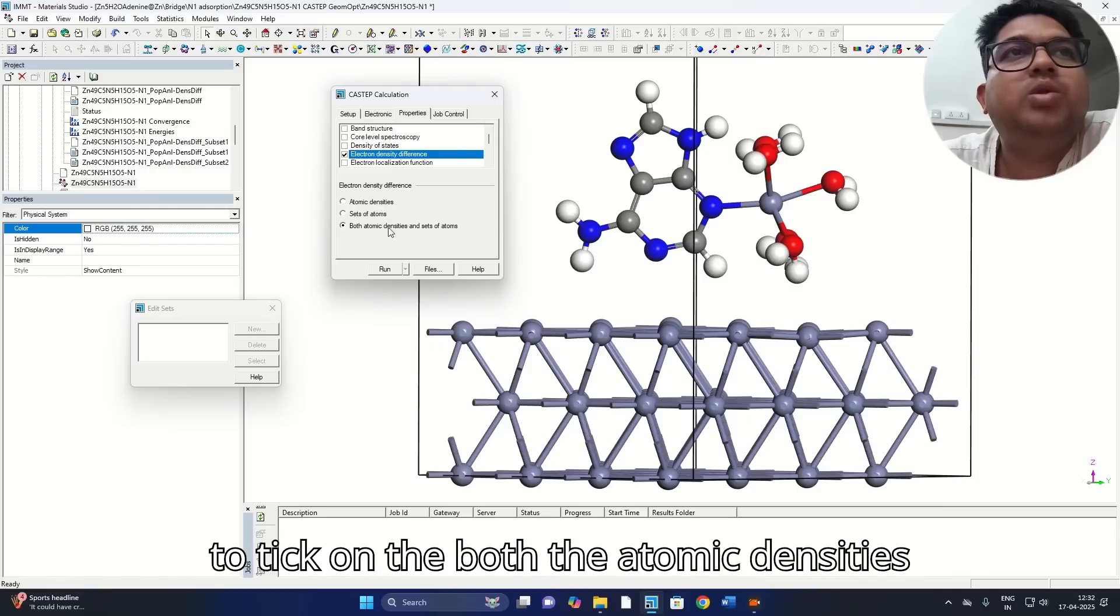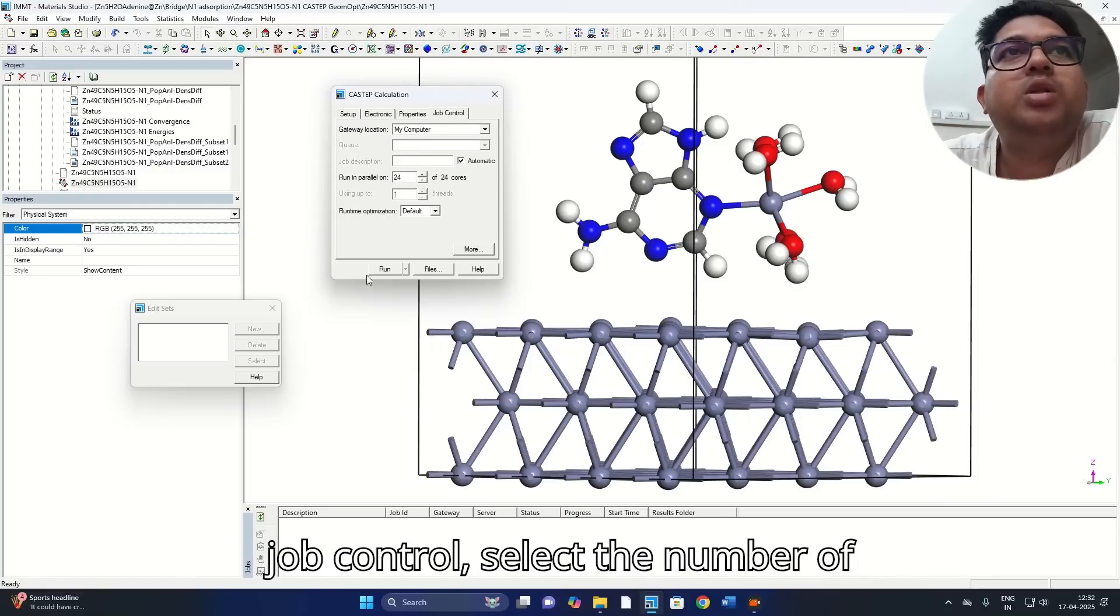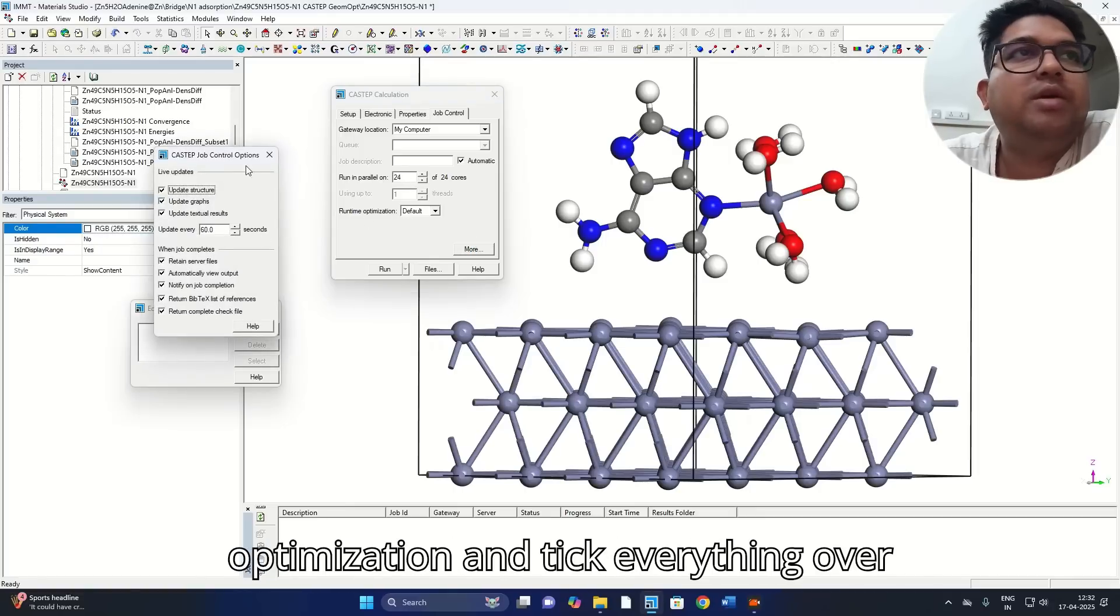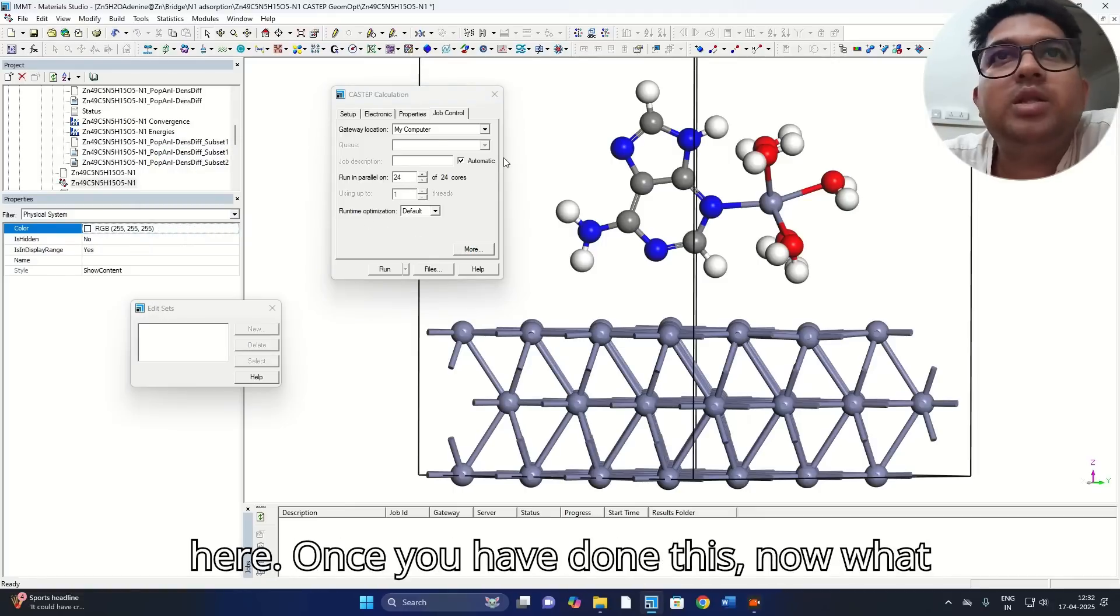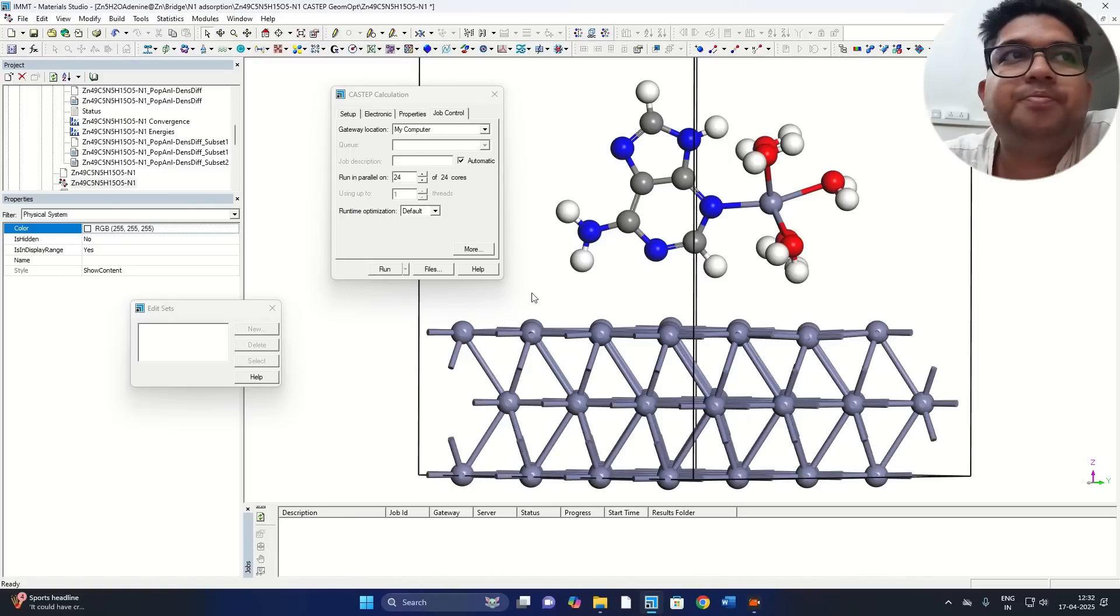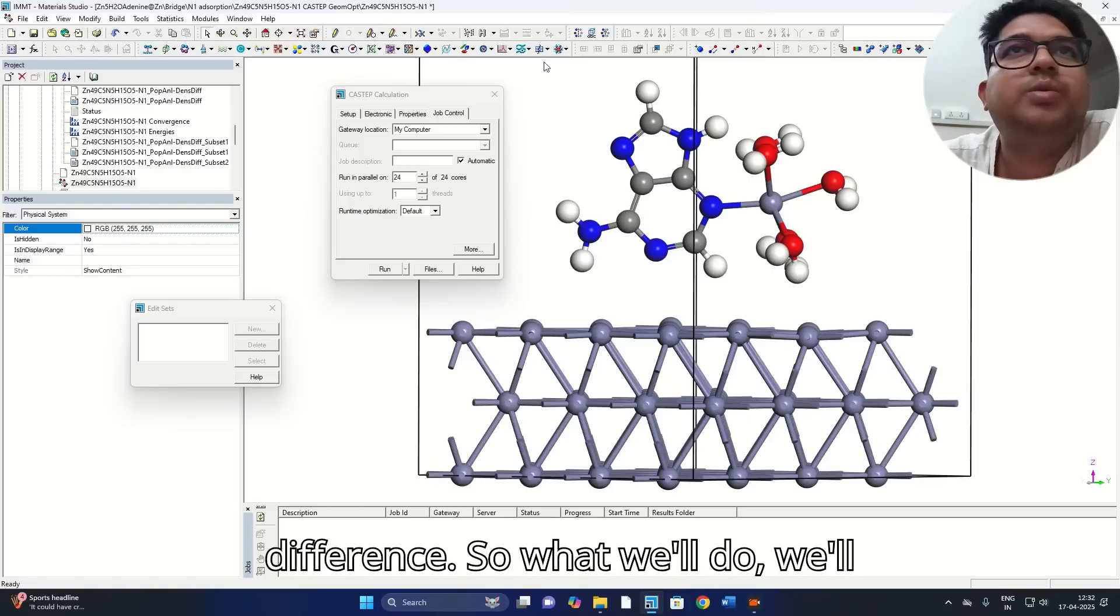Now go to the job control, select the parallel processors and the runtime optimization and check everything. Once you have done this, now what we need to do is we need to set the layers for the electron density difference.